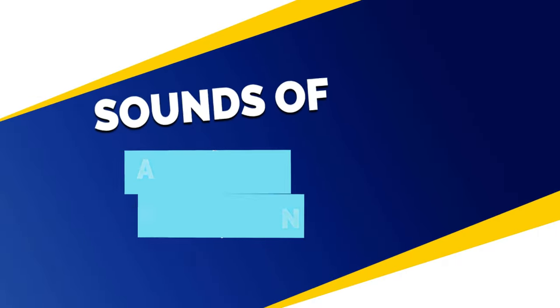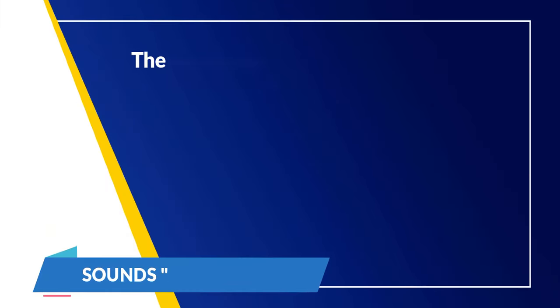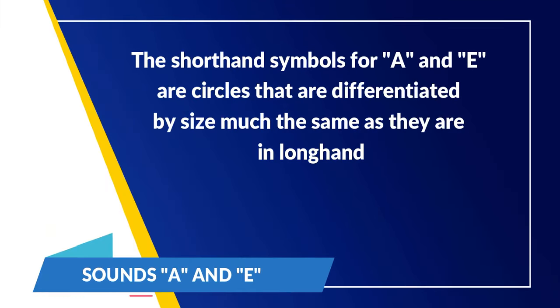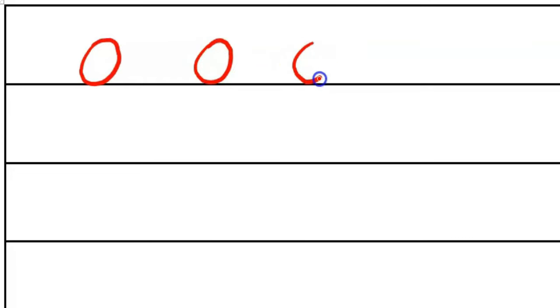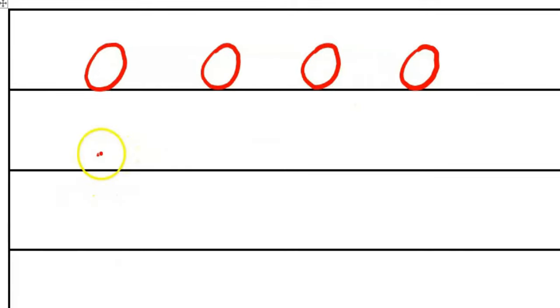The shorthand symbols for A and E are circles differentiated by size, much the same as they are in longhand. The A is a large circle — let us try to write it down. The E is a small circle, so you need to observe proper proportion and alignment.